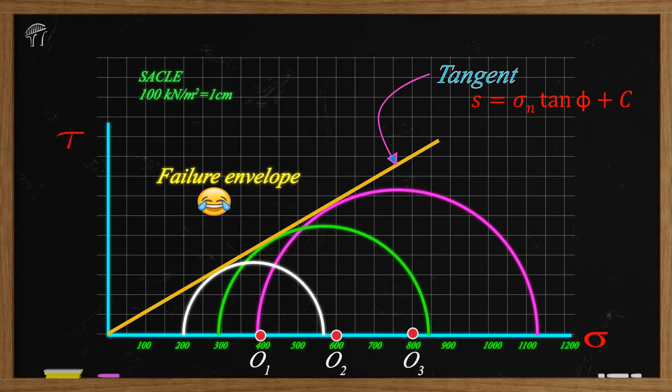Remember in the numerical, we have been asked to determine the failure envelope. So this tangent line is nothing but the failure envelope. The angle between this tangent with the x-axis represents the value of phi and the y-coordinate of the point where failure envelope or our tangent line touches the y-axis gives us the value of cohesion.